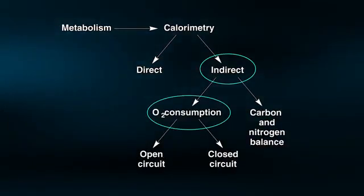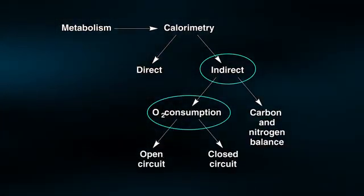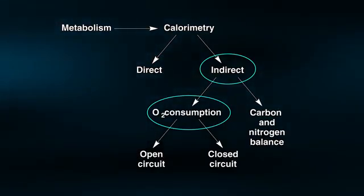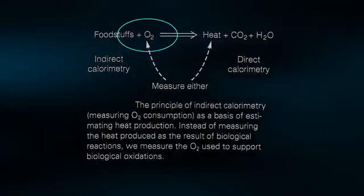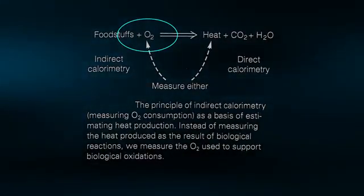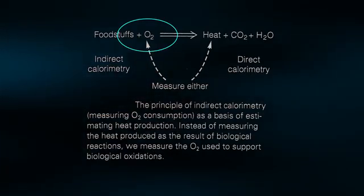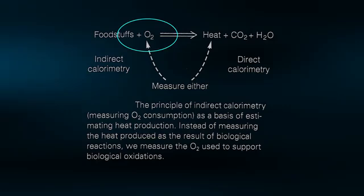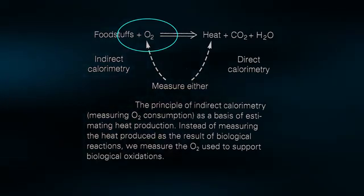Indirect calorimetry is by far the most common method for estimating one's metabolic rate, specifically by the measurement of oxygen consumption. It is based on the observation that oxygen is consumed by the body for energy production when your muscles are working.